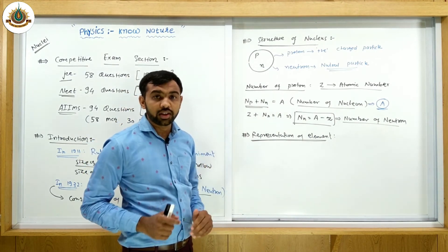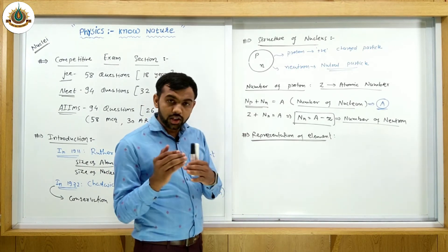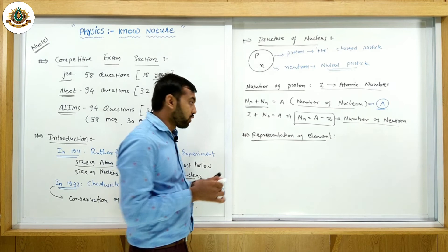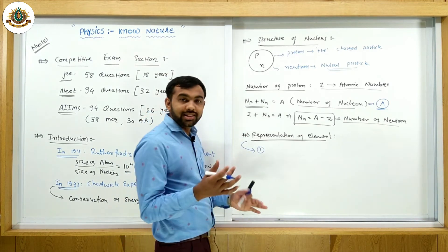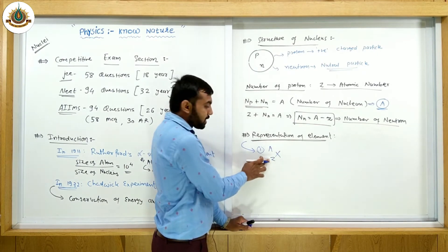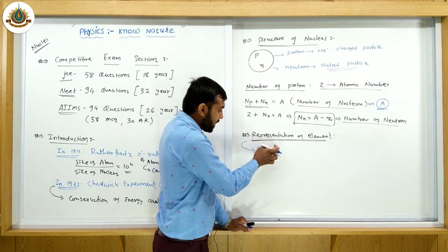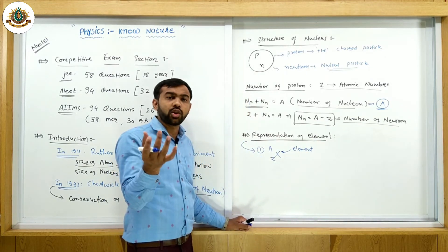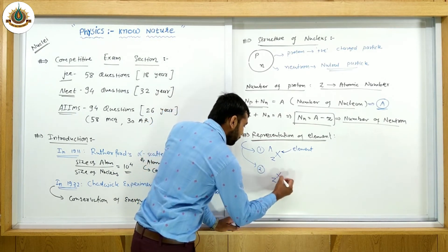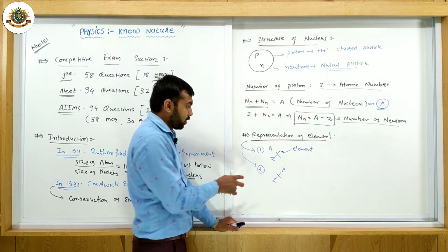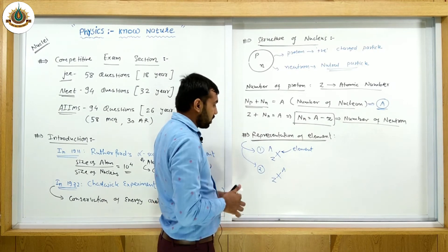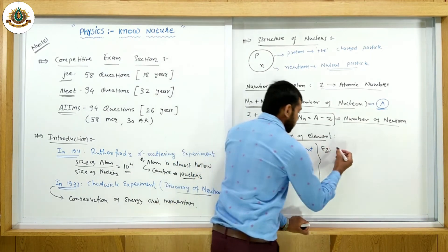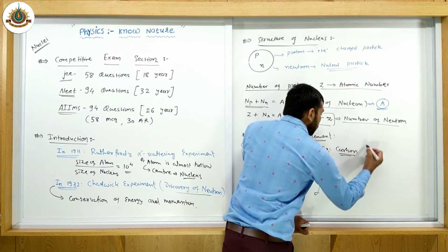Now, how do we represent any nucleus? This is quite important — you must understand this properly because in nuclear reactions, nuclei are written in this form. There are two ways to represent a nucleus. The first way is: Z X A, where Z is the atomic number, A is the total number of nucleons, and X is the element symbol like hydrogen, helium, lithium, etc.